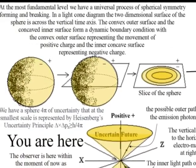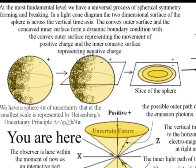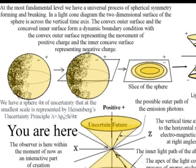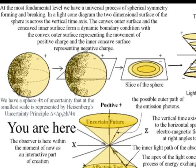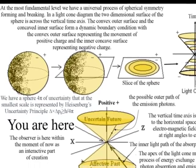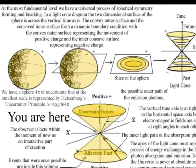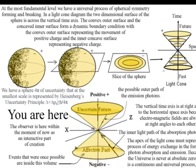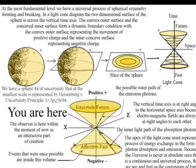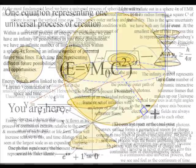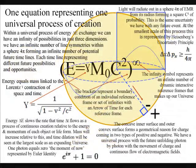At the most fundamental level, this is a process of symmetry forming and breaking that forms greater degrees of freedom for entropy or disorganization, and also greater degrees of freedom for the diversity and complexity of life — with the whole theory being explained by just one equation representing the dynamic geometry of this process.